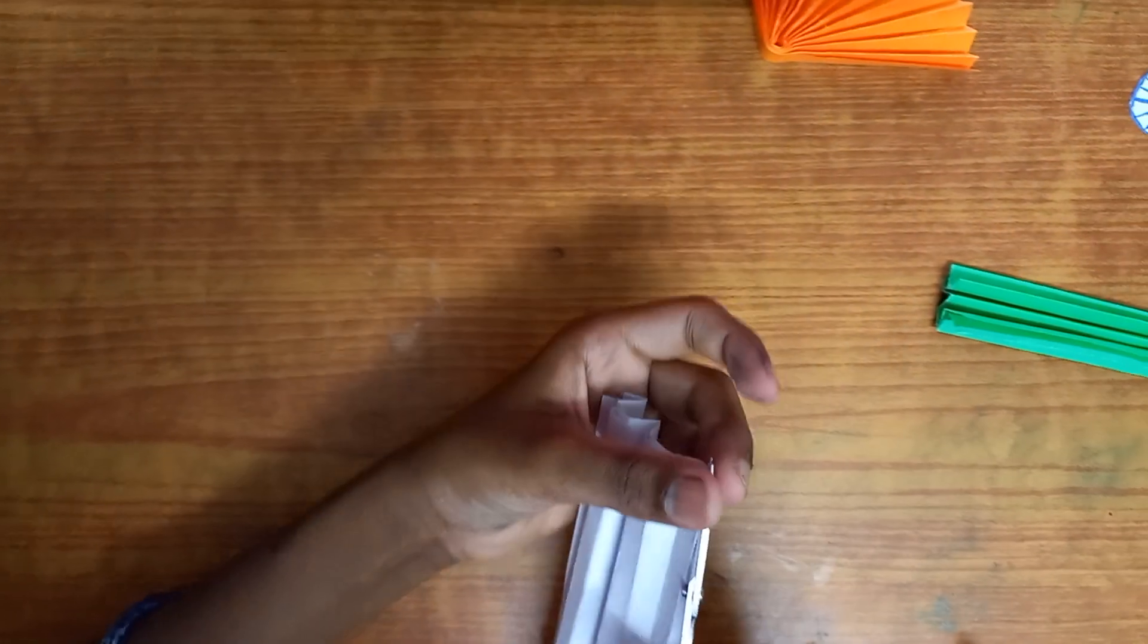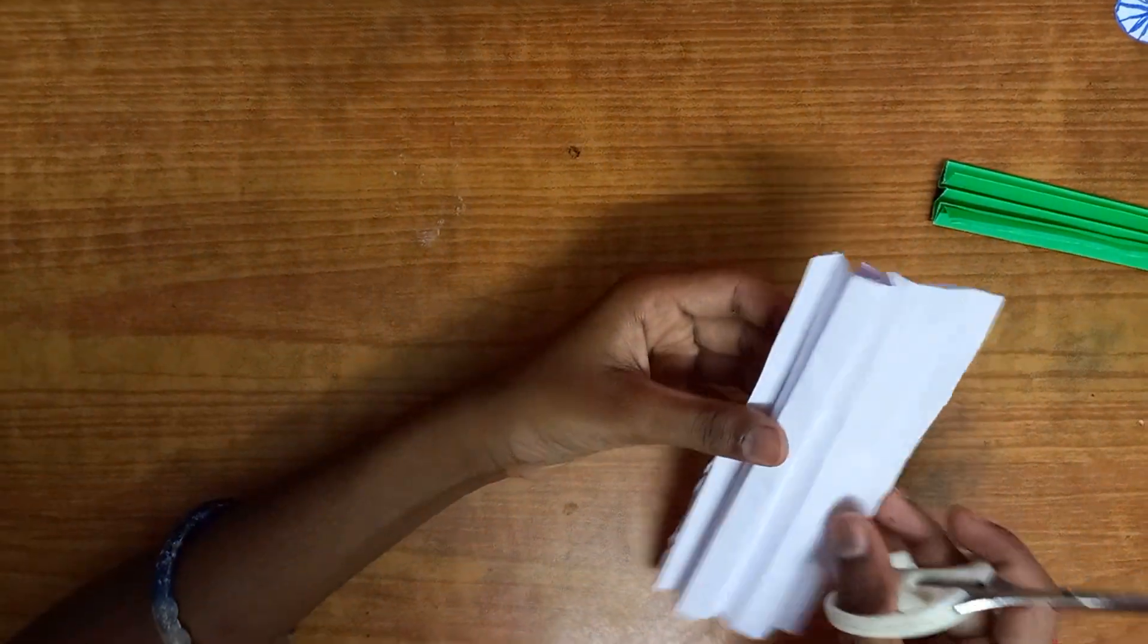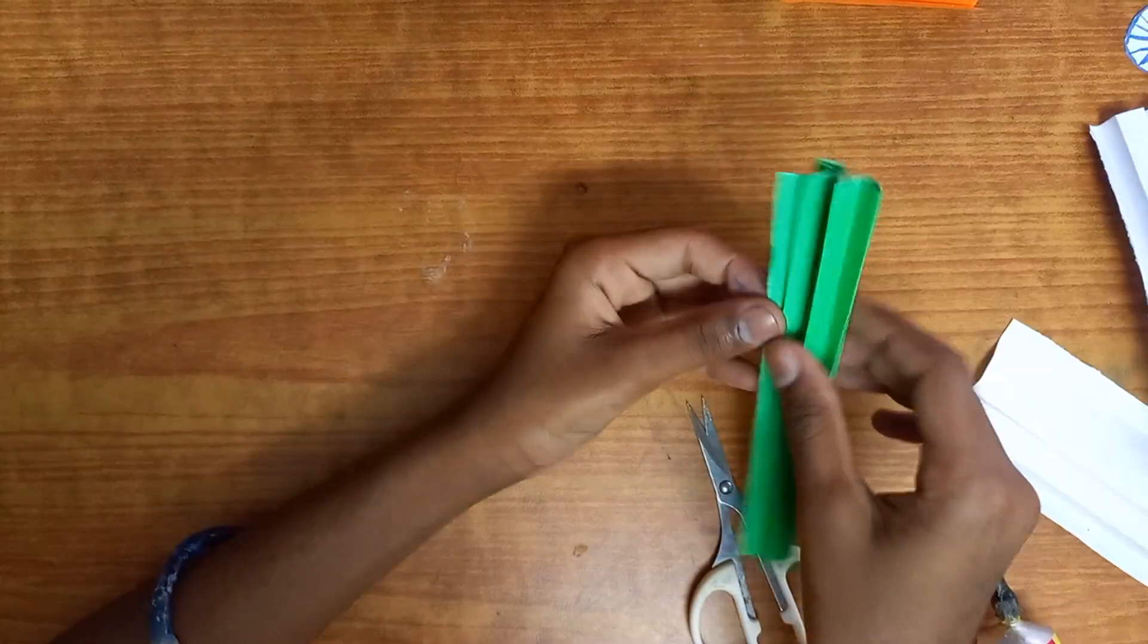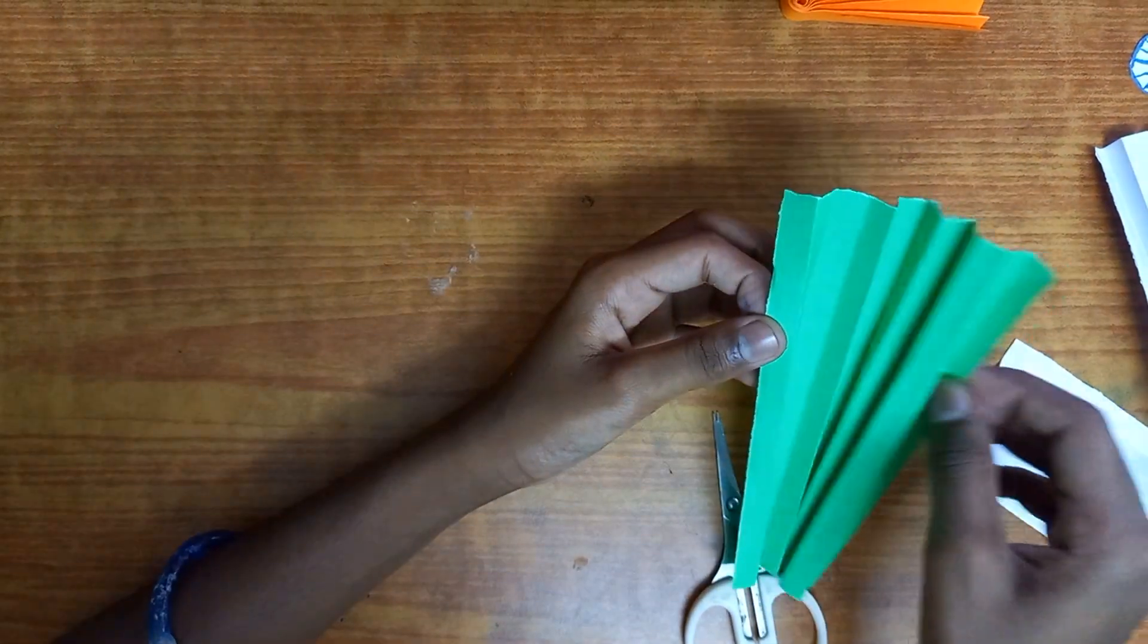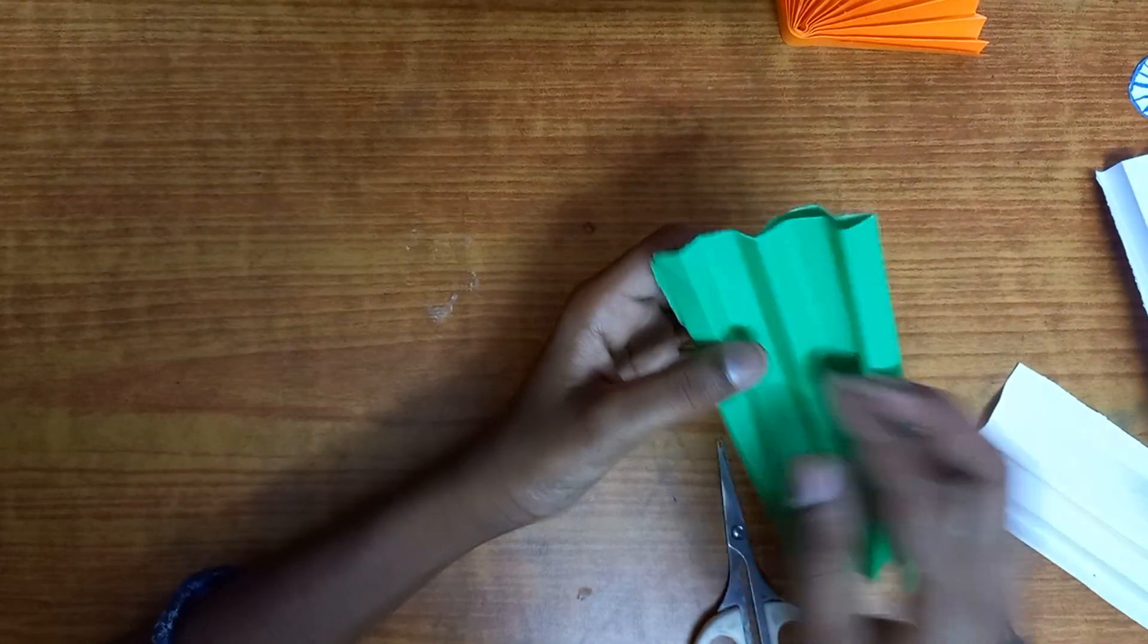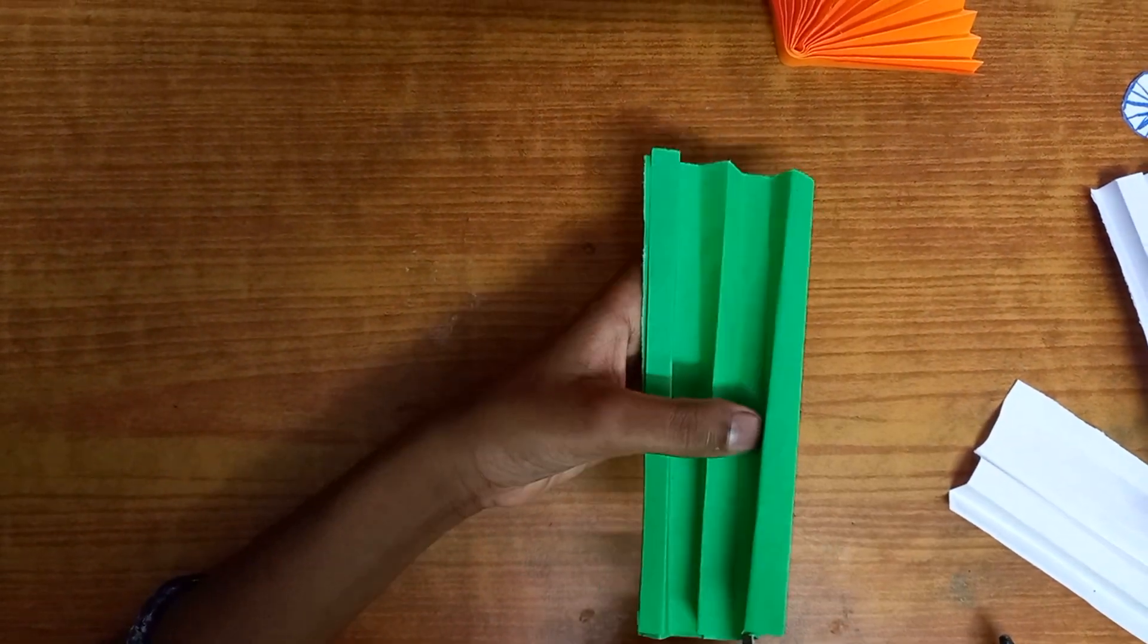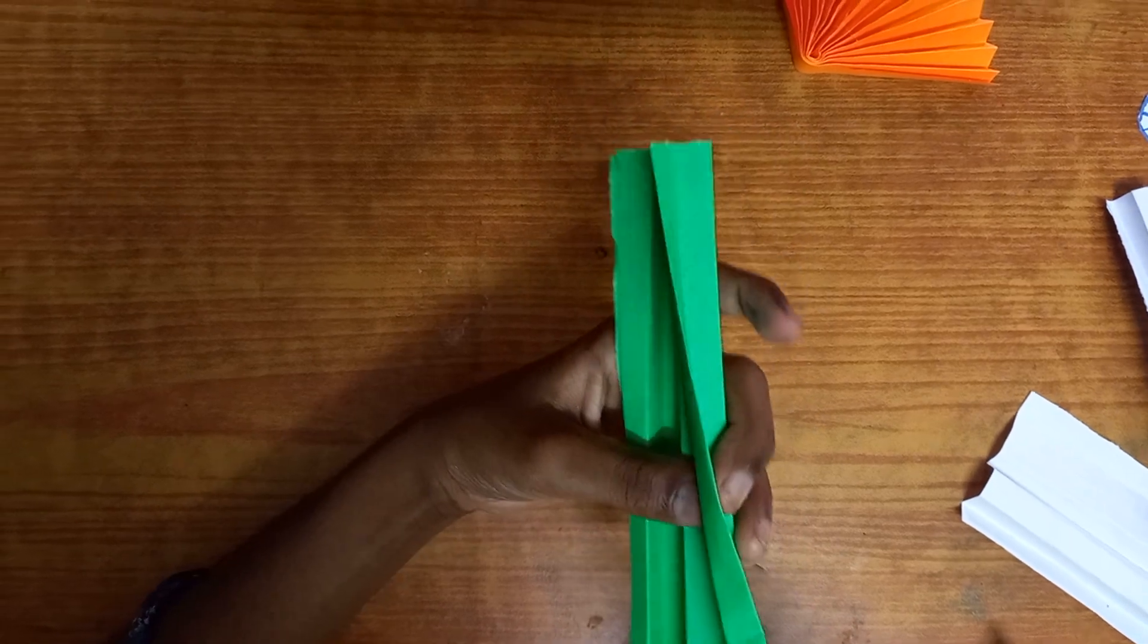Just like so. Just like so. Try to make it nice and precise. There we go. Repeat with the green piece of paper too. Open it up, fold it in half, and cut along the middle crease.